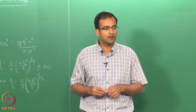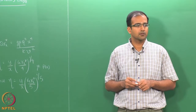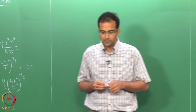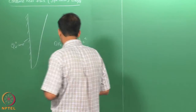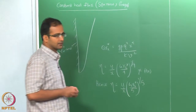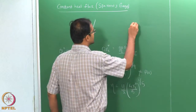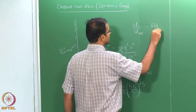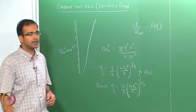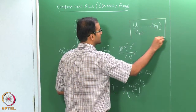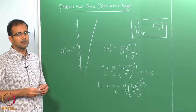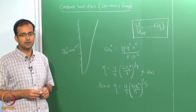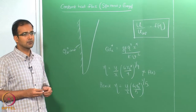With this modified definition of the similarity variable, we will see whether we can successfully reduce the equations into a similarity differential equation. Before doing that, let us also calculate the order of magnitude of the reference velocity. Since we start from the basic assumption in the similarity solution that u divided by u_reference is a function of eta, this is the similarity solution assumption — meaning if you plot a non-dimensional velocity profile, it should be only a function of eta. So you need to know what u_reference is.